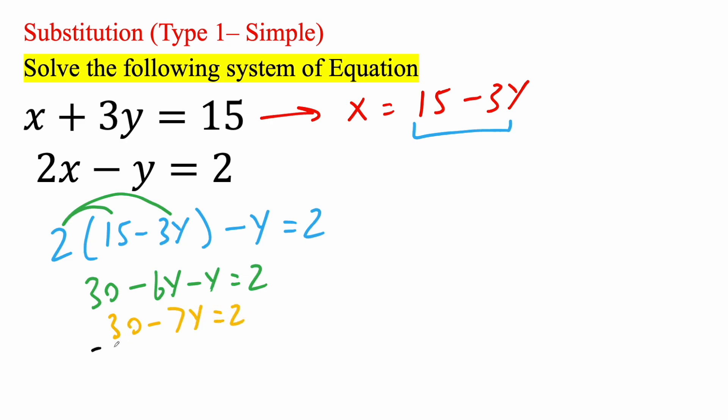And if we want to get rid of 30, subtract 30 on both sides. And so we have 2 minus 30 will give us negative 28. And we still have negative 7y. Now it says negative 7 times y. If we want to get rid of the negative 7, we have to divide by negative 7, divide by negative 7. And so y is equal to 4.